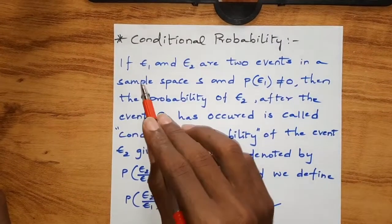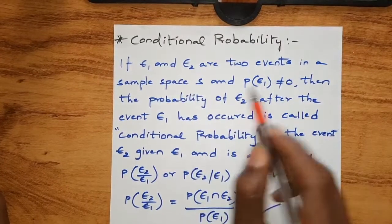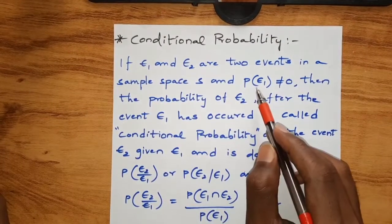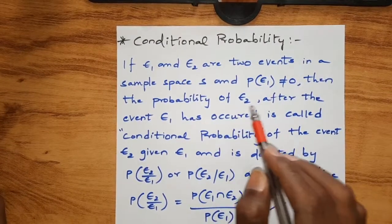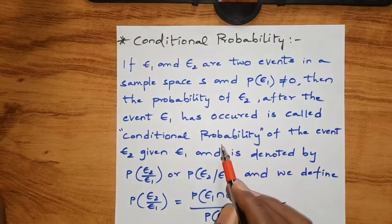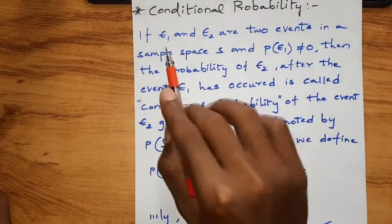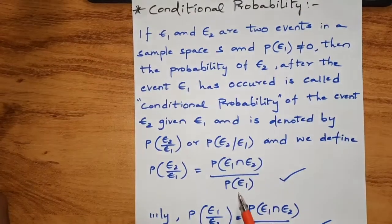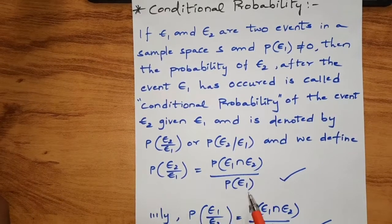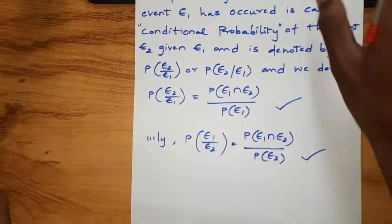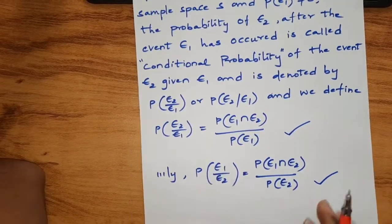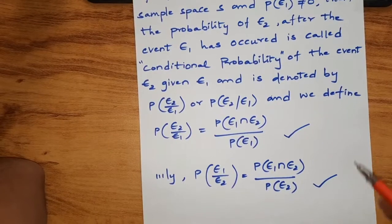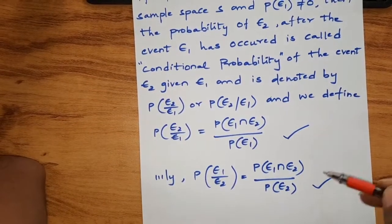Conditional probability: if E1 and E2 are two events in a sample space, and P(E1) is not equal to 0, then the probability of E2 after the event E1 has occurred is called conditional probability. So P(E2|E1) is defined when P(E1) is not equal to 0.